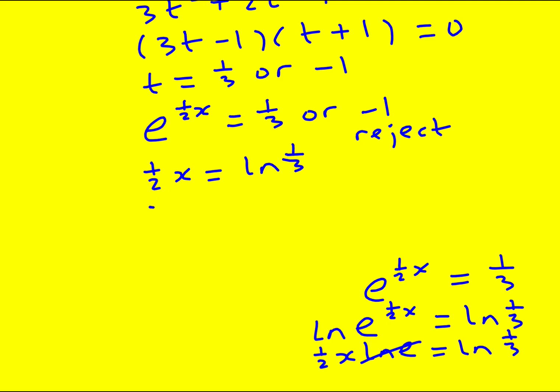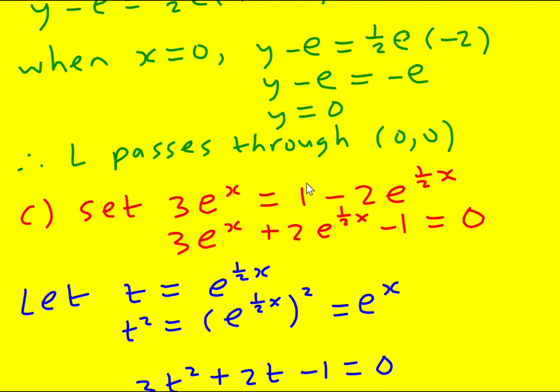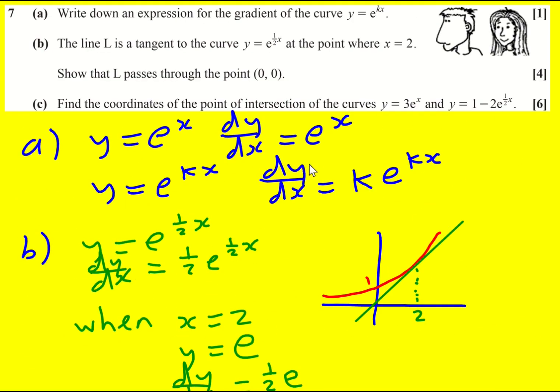Then x equals two ln one third. I could even write that as minus two ln three, because this is three to the power of minus one, and I can bring the minus down. I didn't actually read if it wanted it in any particular form. I'd probably leave it like that.